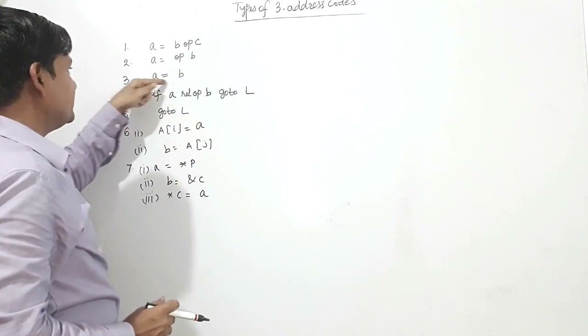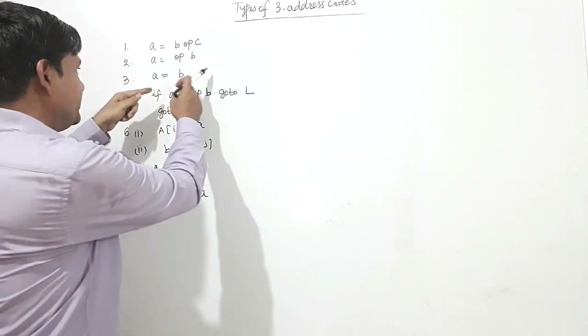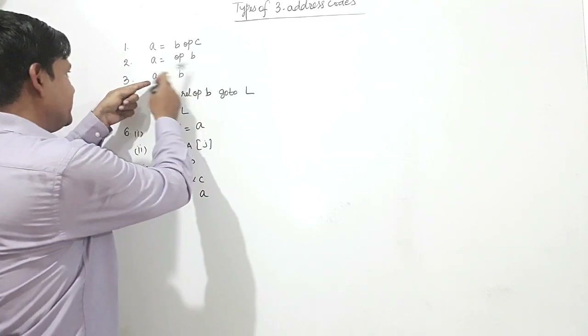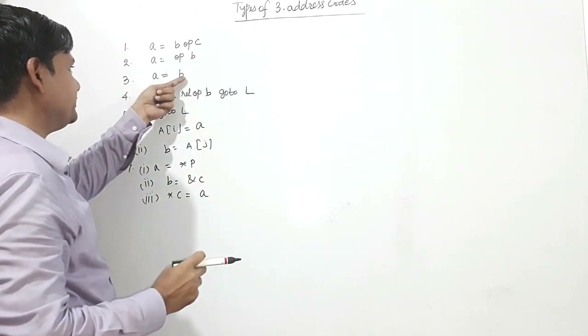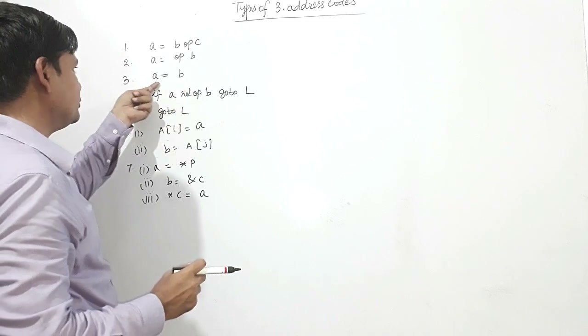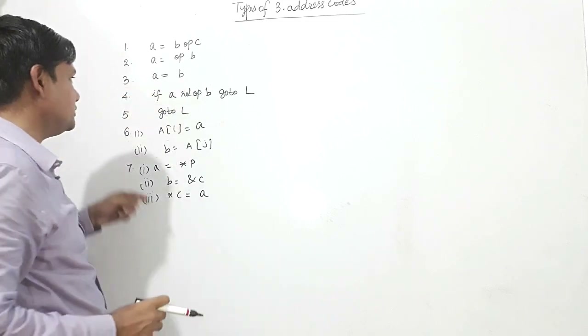And this is the copy type. B is being copied into A, so B is assigned to A. This is also a type of three address code.